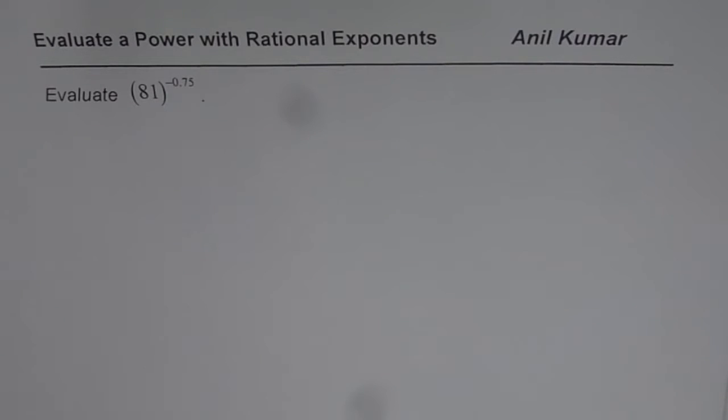In this case the exponent is given in decimal numbers and that makes things very difficult. Let's rewrite the question. We need to find what is 81 to the power of minus 0.75.